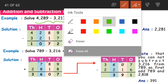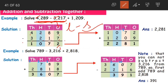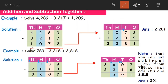Look at the first two numbers: 4000 minus 3000. This is the larger number and this is the smaller number — large minus small, we can do it. So we will solve this first: 4289 minus 3217. Starting from the ones place: 9 minus 7 is 2, 8 minus 1 is 7, 2 minus 2 is 0, 4 minus 3 is 1. We got 1072 as our answer.